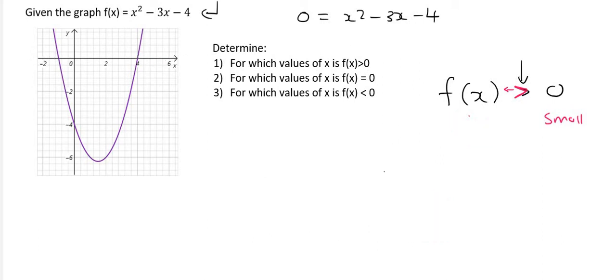The next one says, where is f of x? So remember, when you see f of x, you should think of y. So they're saying, for which values of x is the y value equal to 0? Well, we know that the y values are equal to 0 over there, and over there.